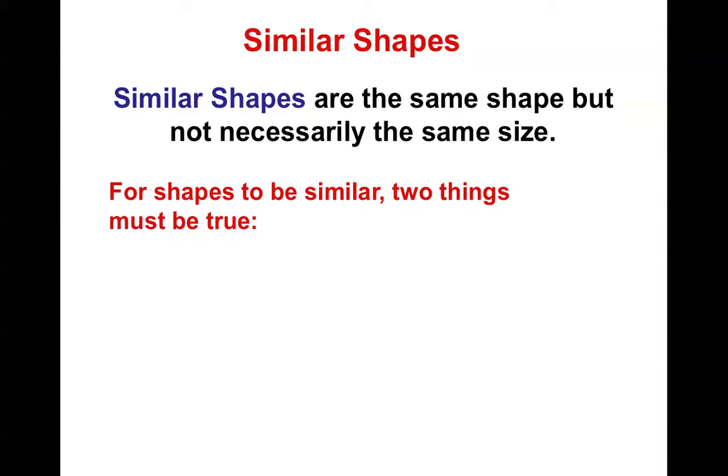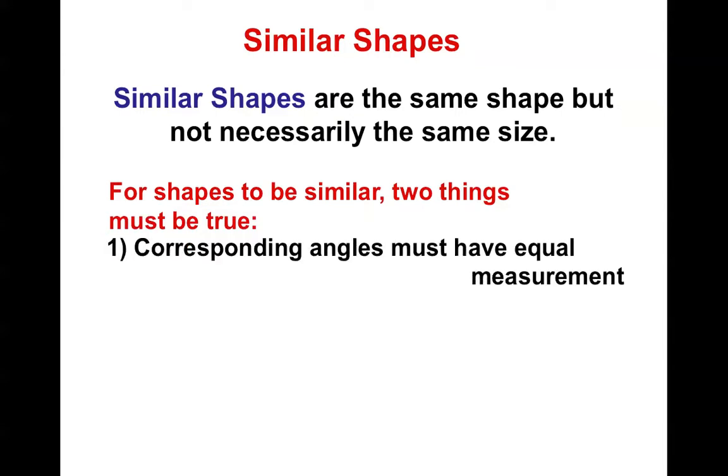You know you have similar shapes if two things are true. One, all the angles are equal. Two, all the corresponding sides must be proportional.